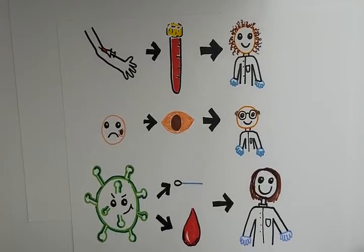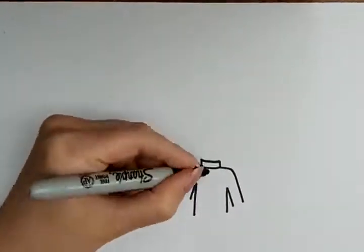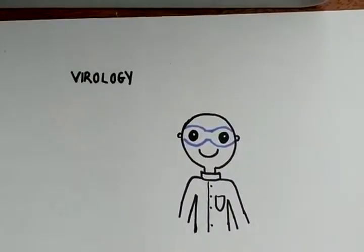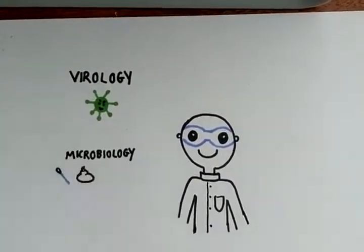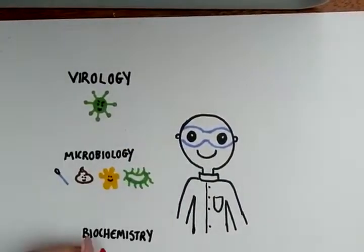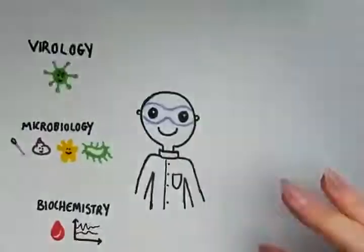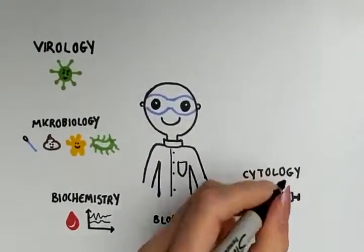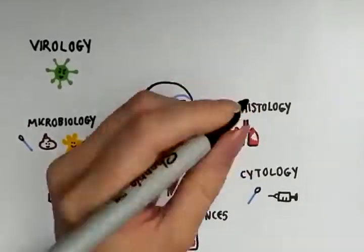As you can see from these examples, biomedical scientists work in a whole range of disciplines. Some examples include virology, microbiology, biochemistry, haematology, cytology, histology, point of care testing, and mortuary.